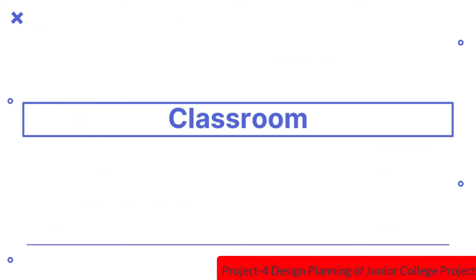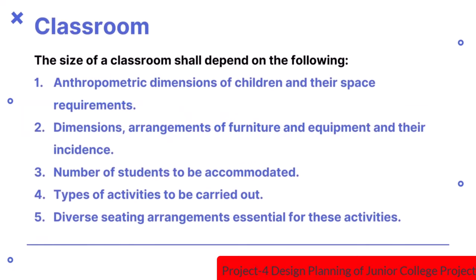Let us discuss the requirements of a classroom. The basic unit of a school is the classroom. The classroom, apart from satisfying the minimum requirements of space, fittings and furniture, shall be designed to meet adequate functional and environmental requirements. The size of a classroom shall depend on: anthropometric dimensions of children and their space requirements; dimensions and arrangements of furniture and equipment; number of students to be accommodated; types of activities to be carried out; and diverse seating arrangements essential for these activities.